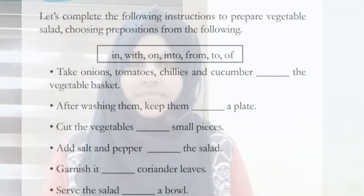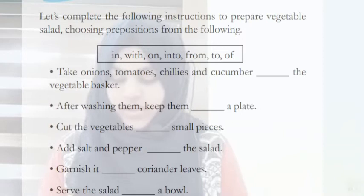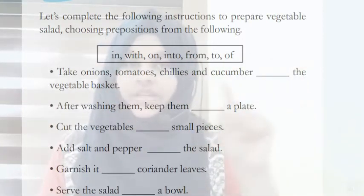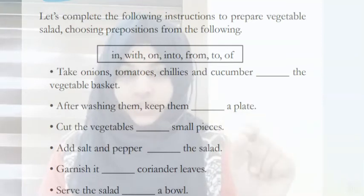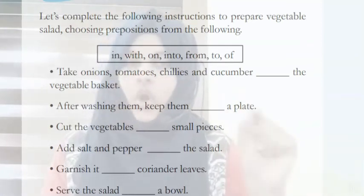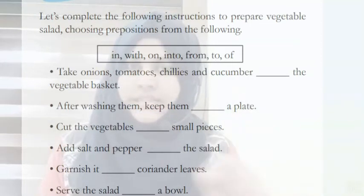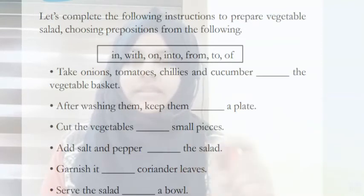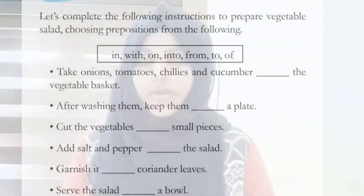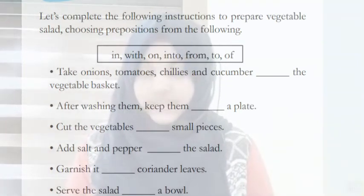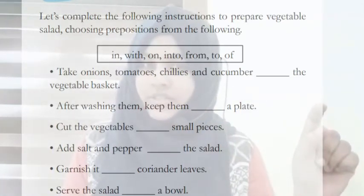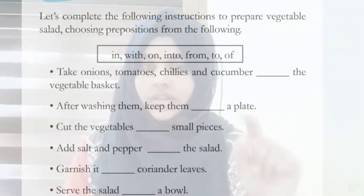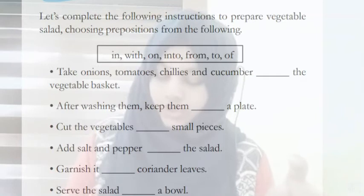What are prepositions? Let us look. You can see some words given in the box: in, with, on, into, from, to, of. The words used to connect, to get a meaningful sentence, are called prepositions. So, these are the prepositions: in, with, on, into, from, to, off.